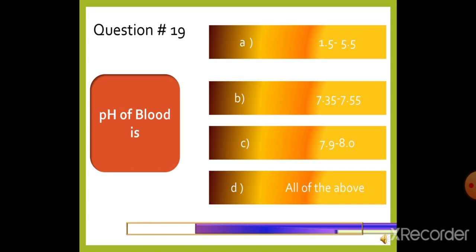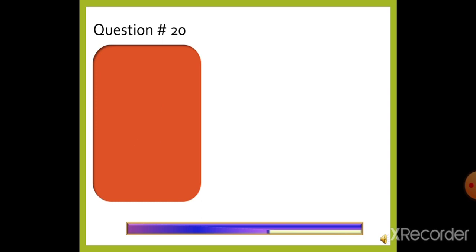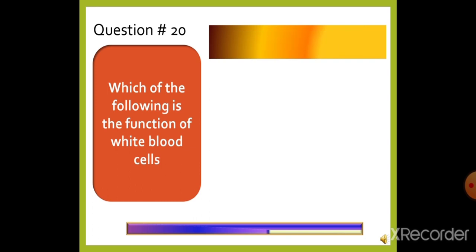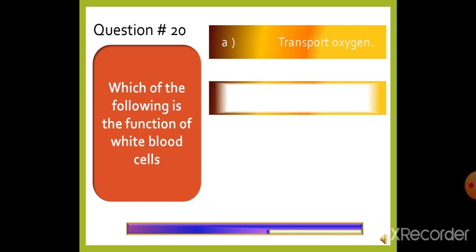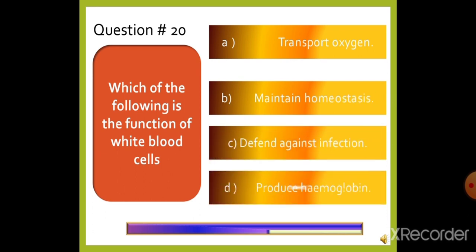Question 20: Which of the following is the function of white blood cells? — option A: Transport oxygen, option B: Maintain homeostasis, option C: Defend against infection, or option D: Produce hemoglobin. The right answer is option C, defend against infection.